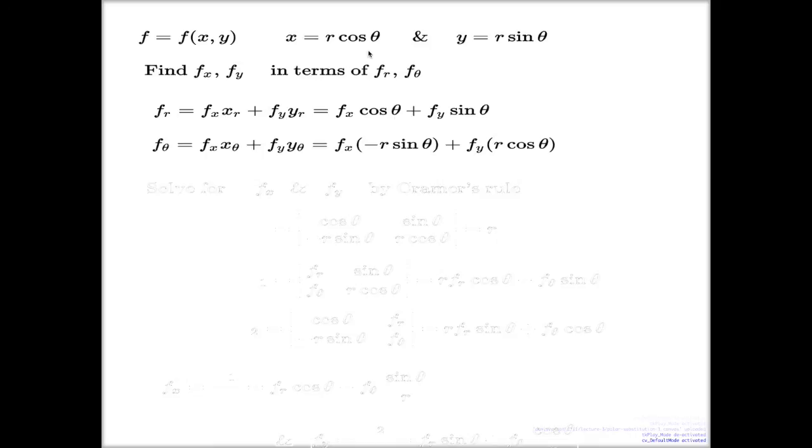Maybe Gaussian elimination, right? Maybe row echelon forms, all of these beautiful things, right?